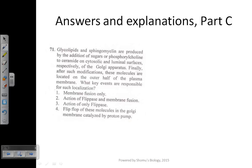First read the question: Glycolipids and sphingomyelin are produced by the addition of sugars or phosphorylcholine to ceramide on cytosolic and luminal surface respectively of the Golgi apparatus. Finally, after such modifications, these molecules are located on the outer half of the plasma membrane.